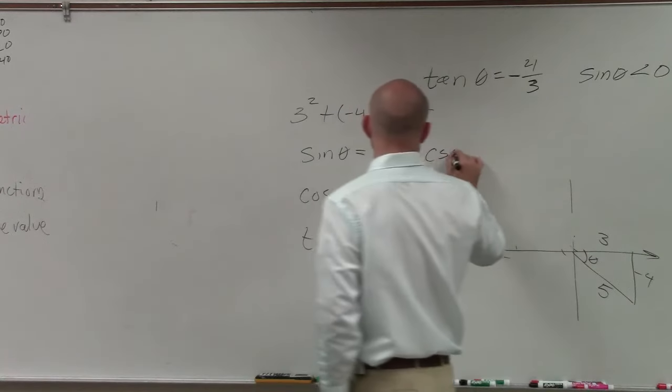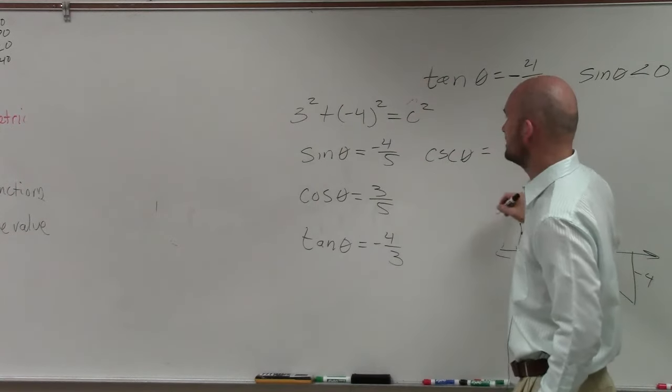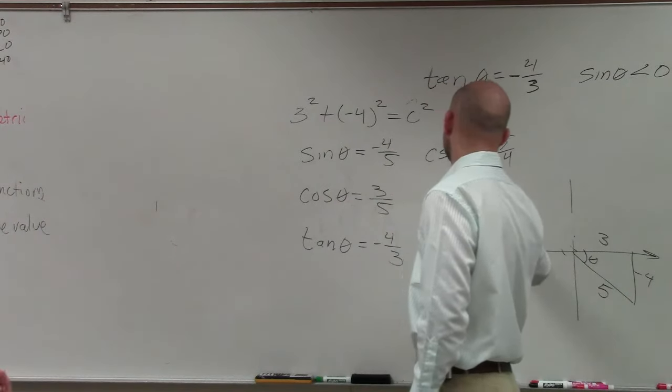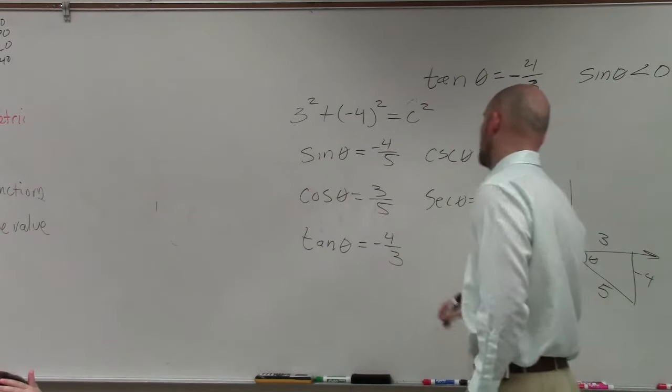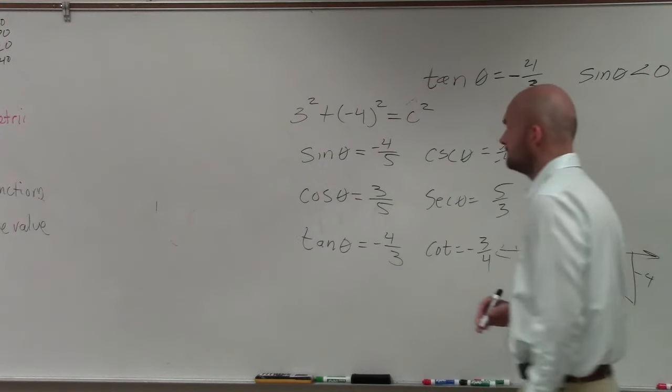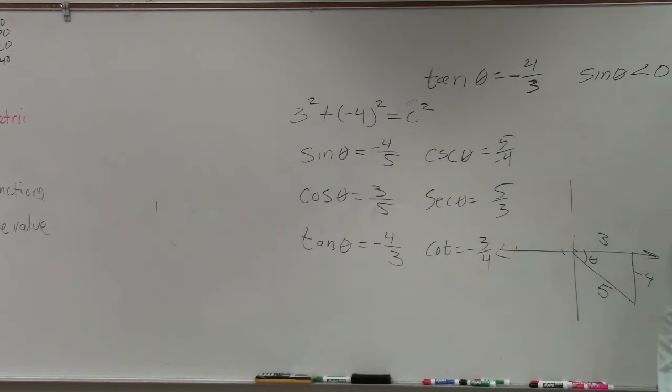Then if I want to do the reciprocal functions, cosecant is 5 over negative 4. Secant of theta, it's 5 over 3. And the cotangent is equal to negative 3 over 4. OK? And that's it.